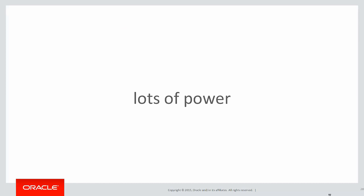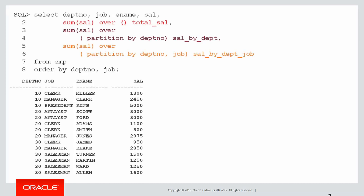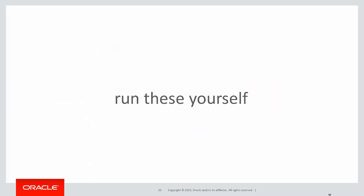There's a lot of power when you start using aggregation analytics. For example, in a single query we could look at the total salary over the whole table, the total salary by department number, by department number and job — all with one simple query. You can run these scripts yourself; you'll see these from the LiveSQL link you can click on below.